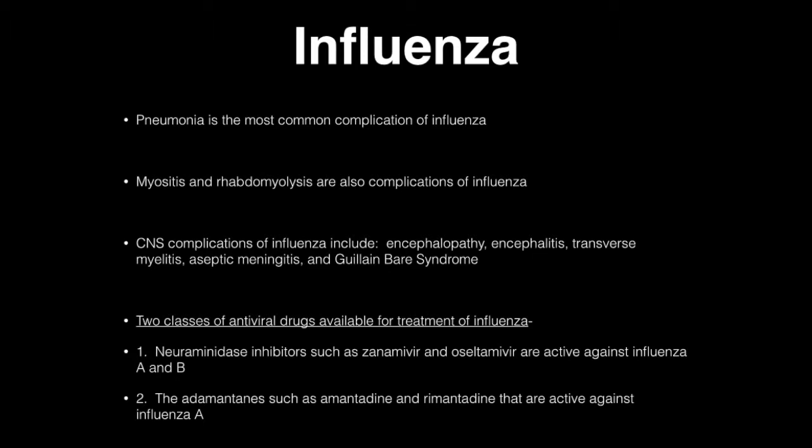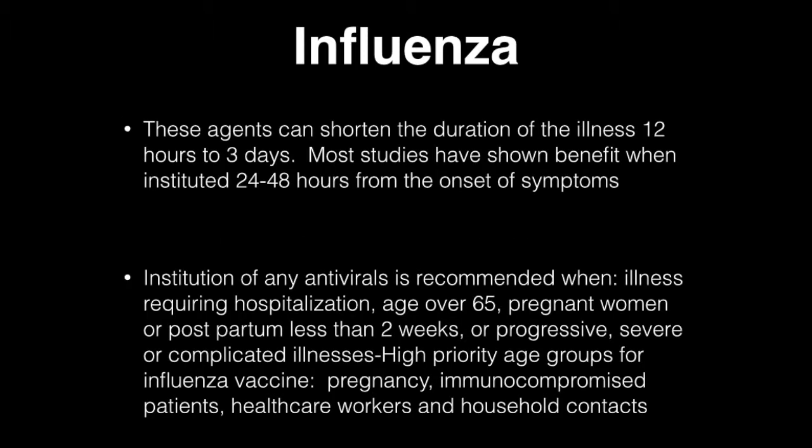There are two classes of antiviral drugs available for treatment of influenza. Neuraminidase inhibitors such as zanamivir and oseltamivir are active against influenza A and B. Adamantanes such as amantadine or rimantadine are active against influenza A only. These agents can shorten the duration of illness by anywhere from 12 hours to 3 days, with most benefit when instituted within 24 to 48 hours from onset of symptoms.